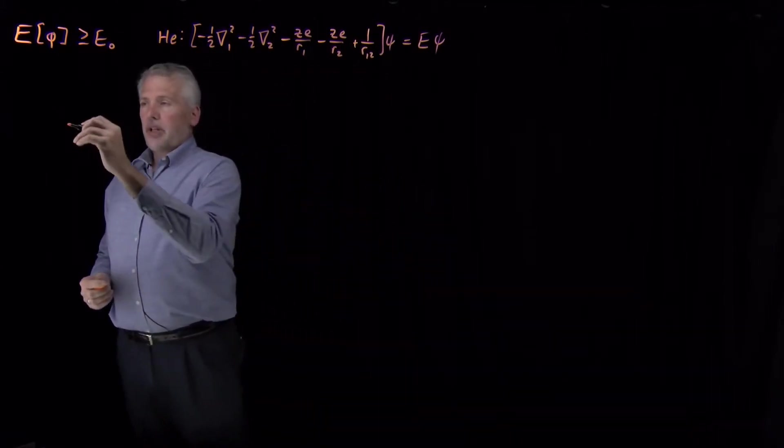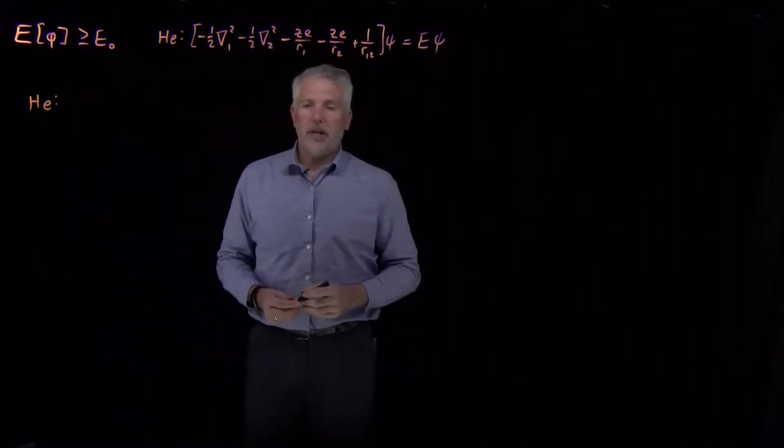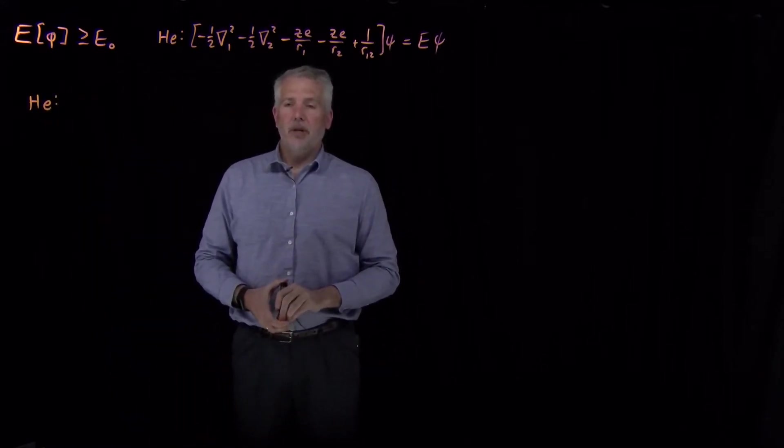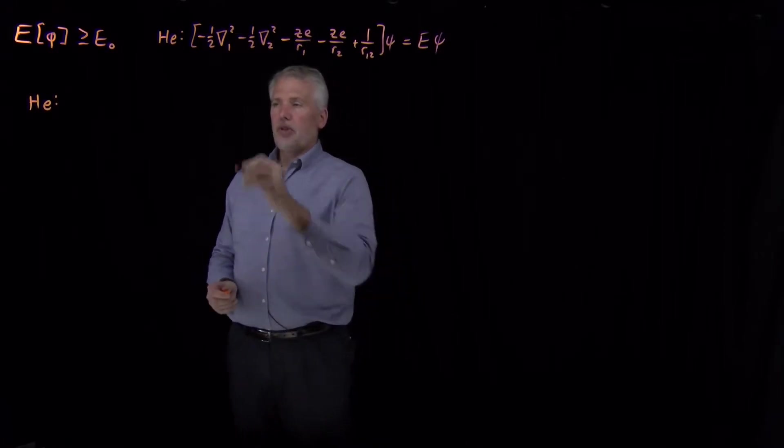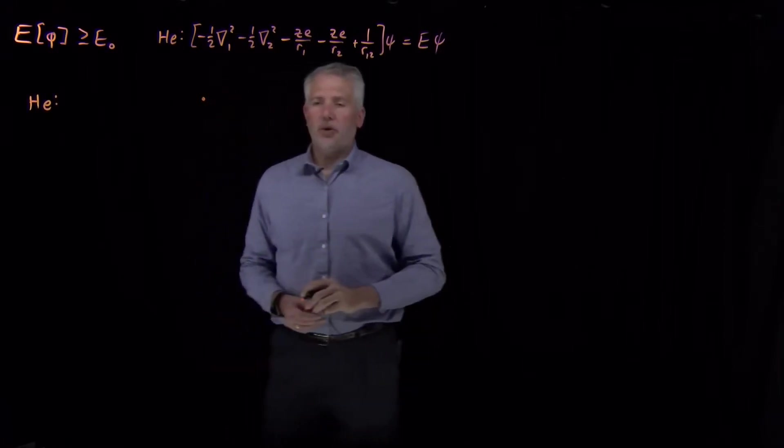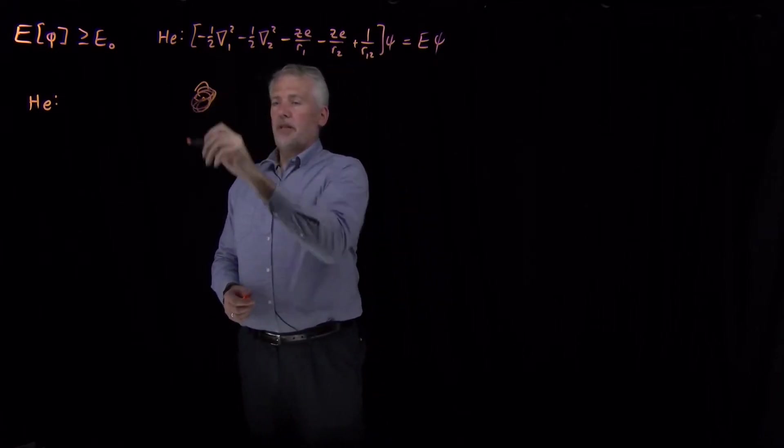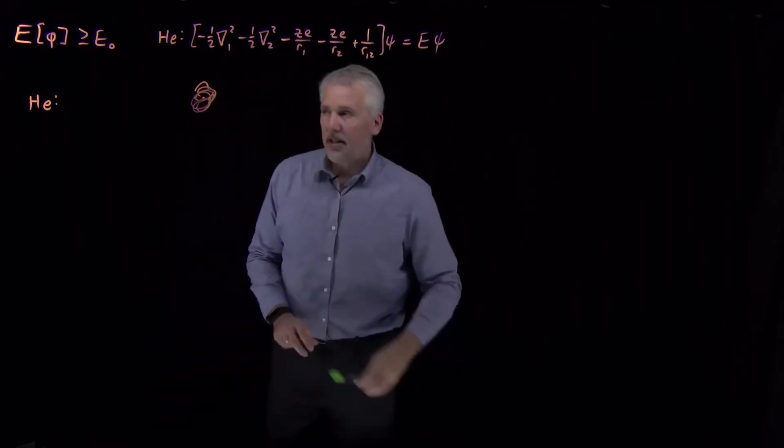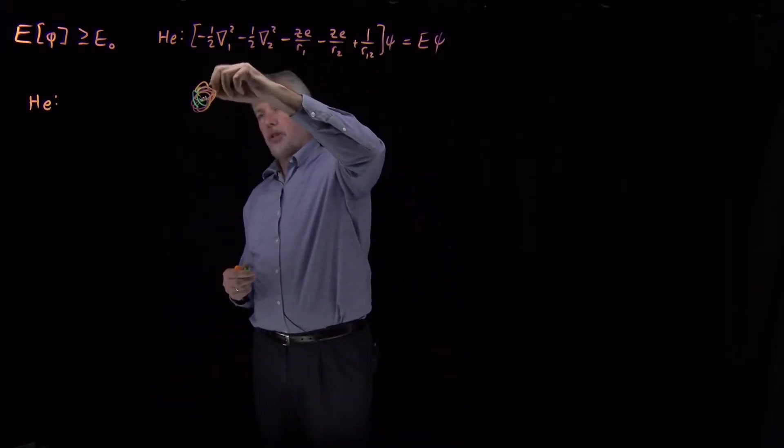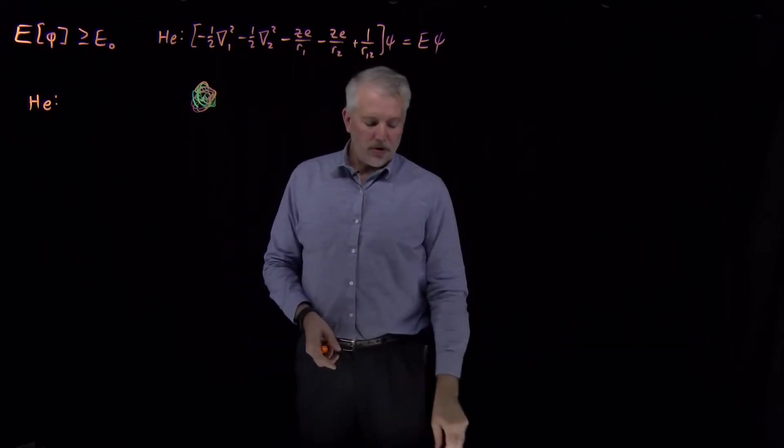So let's start by trying to understand what we can use as a variational expression for the helium atom trial function. So if we think about what the helium atom looks like, it's got a nucleus with charge 2, it's got an electron that lives somewhere about that nucleus, and it's got a second electron also, which I'll draw in a different color, that also occupies the region around that nucleus.